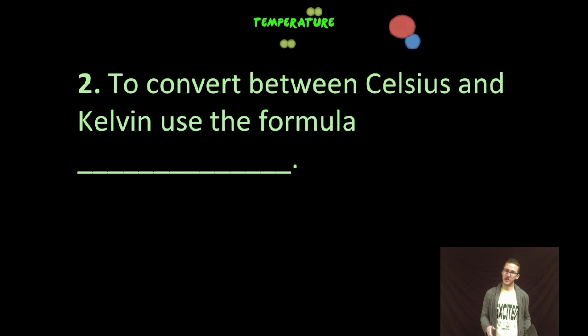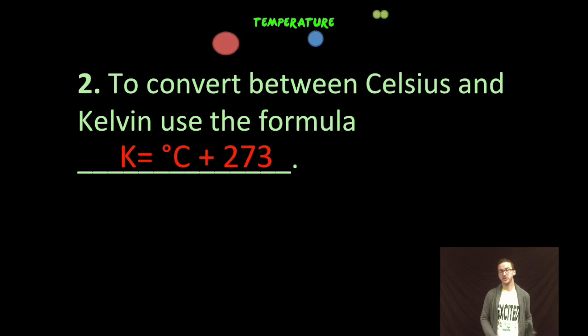Now, in order to convert between those two scales, there's a quick formula where you simply have to add 273 to your temperature in degrees Celsius.